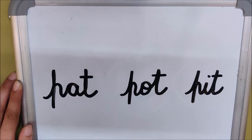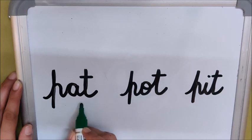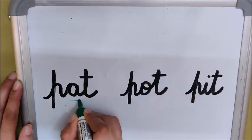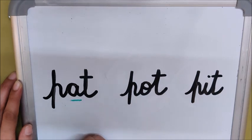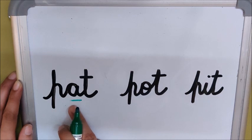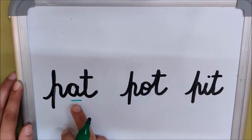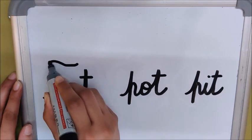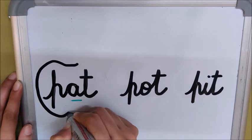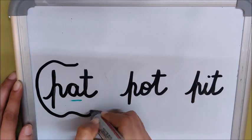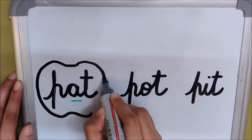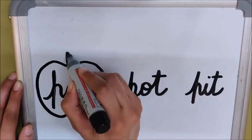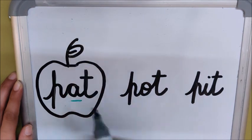To tell me that, you have to check the middle sound. Children, what is the middle sound in 'pat'? 'A' — 'A' is the middle sound. So is it an apple word, orange word, or idly word? Correct — it is an apple word! So I am going to draw an apple here because it is an apple word.